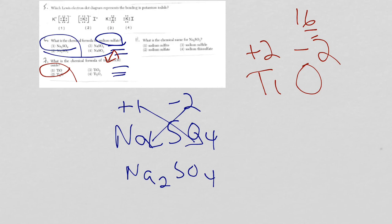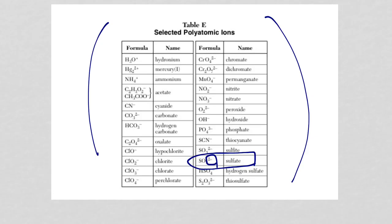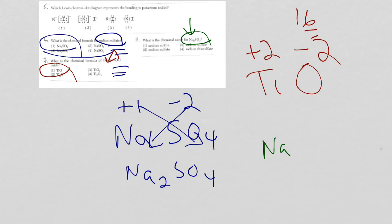Then finally for question 11, we're looking for the name for Na₂SO₃. Since sodium is a group 1 metal, it does not need the Roman numeral after the metal name. I'm looking for SO₃, so I go back to reference table E. SO₃ with a 2-minus charge is sulfite with the ITE ending. So the name here is sodium sulfite, which is choice one.